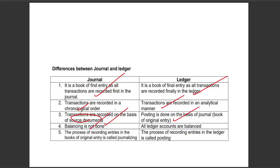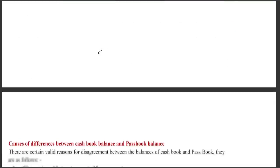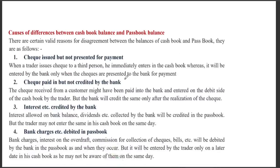For balancing the ledger, we use journalizing and posting. In the bank reconciliation statement, we reconcile the cash book balance and the passbook balance when there is a difference between them. One cause is a cheque issued but not presented for payment.